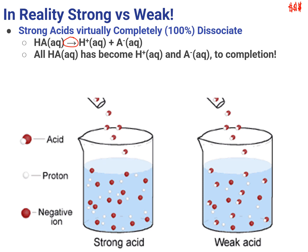If we were to think of a strong acid at equilibrium and draw an ice table, looking at the beaker on the left, originally I would have had 16 moles of HA. These HAs are falling into solution. I put 16 moles of HA in the beaker on the left, and if you look at it, none of those particles in solution are still together as an HA.